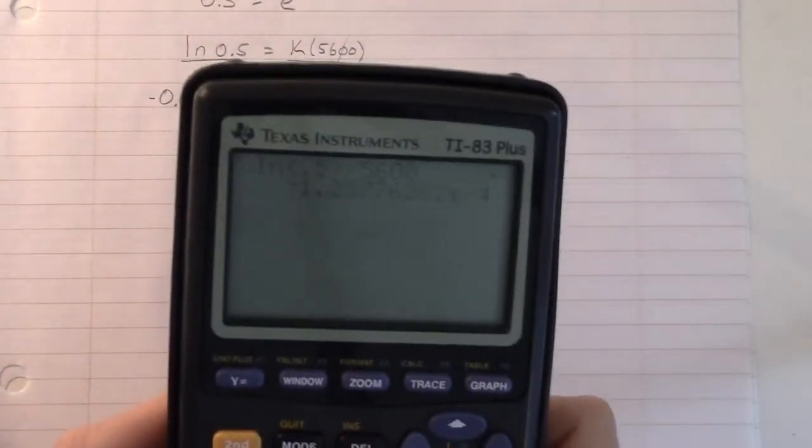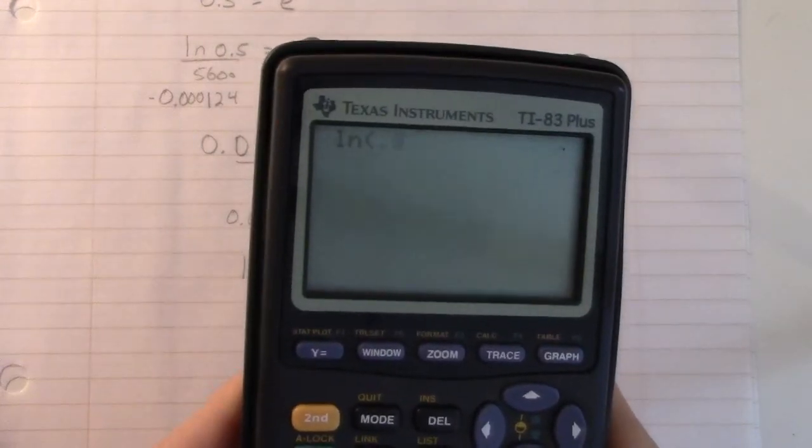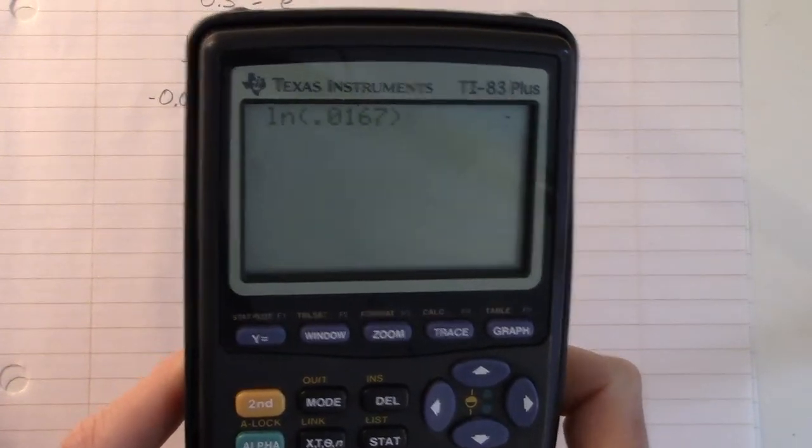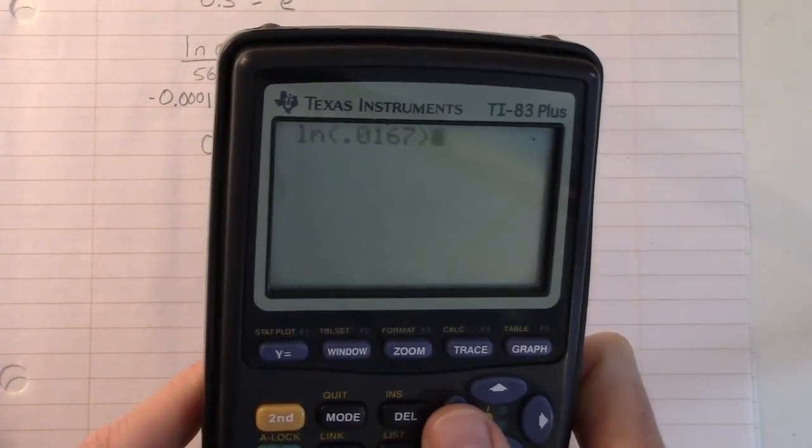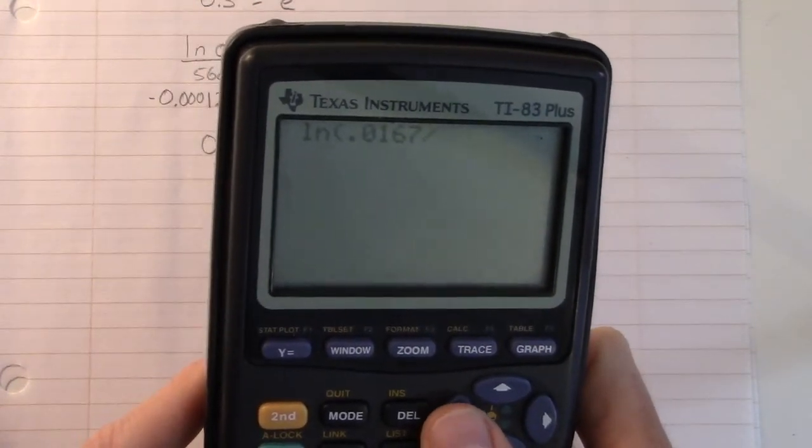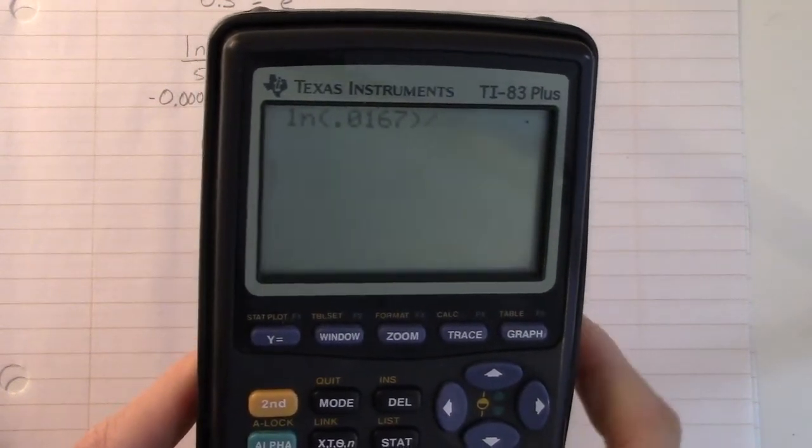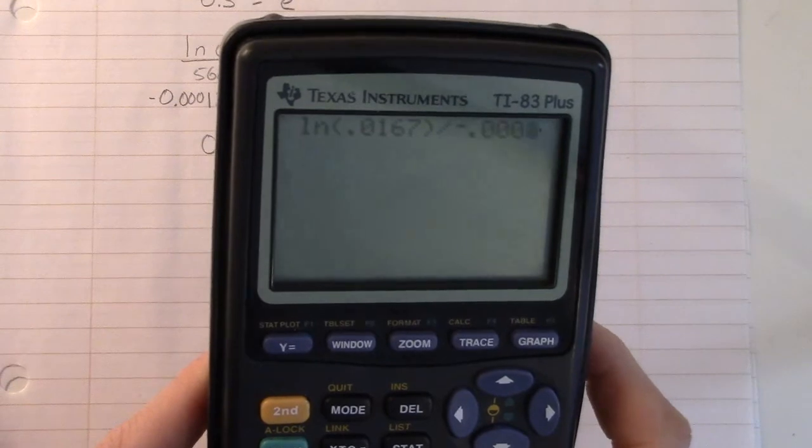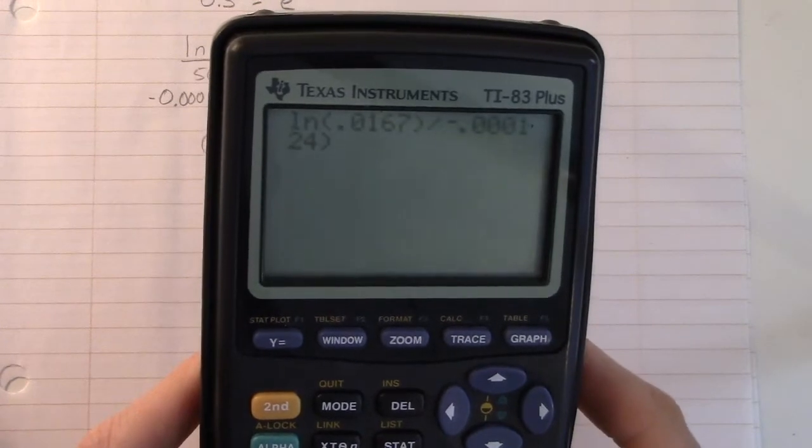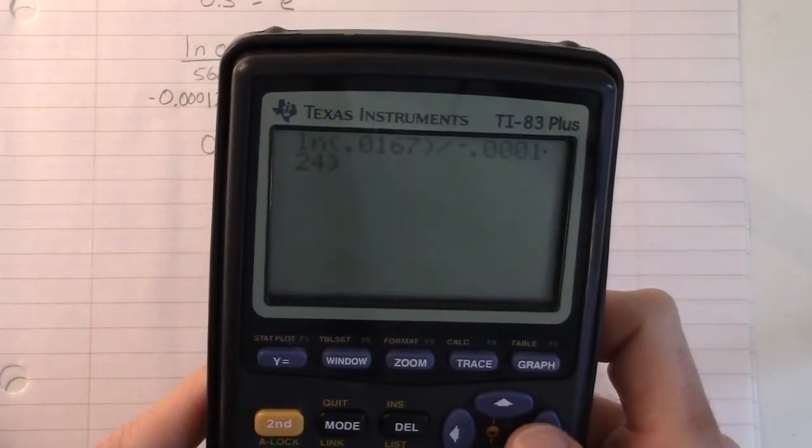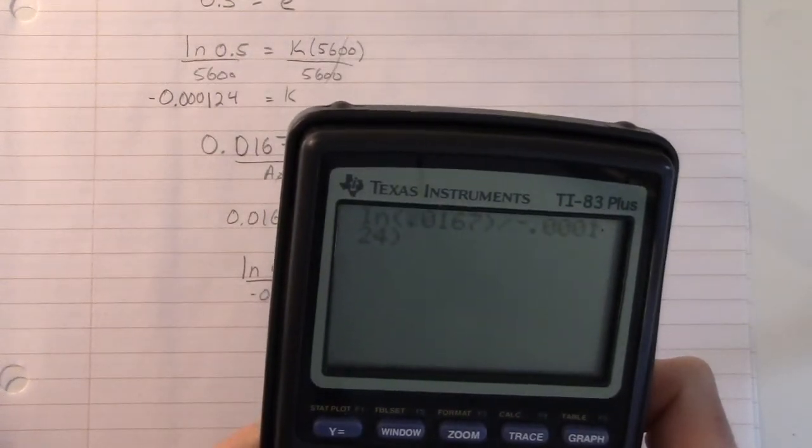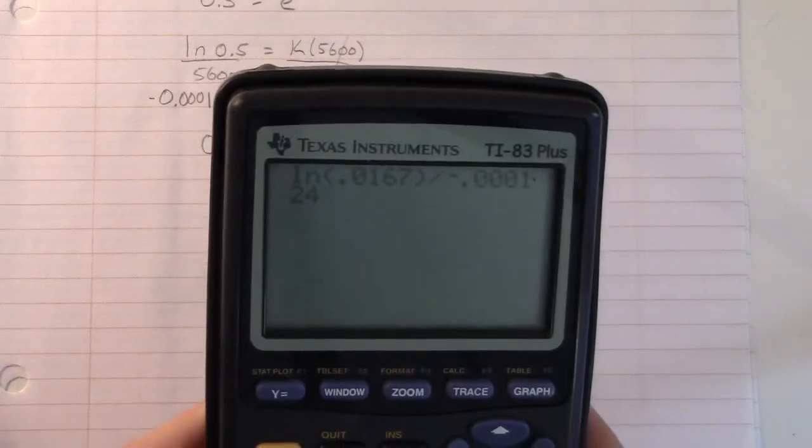And then t will equal whatever the natural log of that is divided by that negative number. So, using our calculator, alright, the natural log of 0.0167. Now, it's really important right here. I didn't mention this earlier, but you have to close the parentheses because if you don't close the parentheses, it's going to think that you're still inside the log. So if I just started dividing right here, I'm still inside the logarithm, and I don't want that. I want to take the log of this, then take that answer and divide it by negative 0.000124. Alright. And hit enter. Oop. Syntax error. What did I do wrong? I'm looking through the screen here. Let's see. The natural log of that. Oh, I added an extra parentheses by accident. Alright. Hit enter.